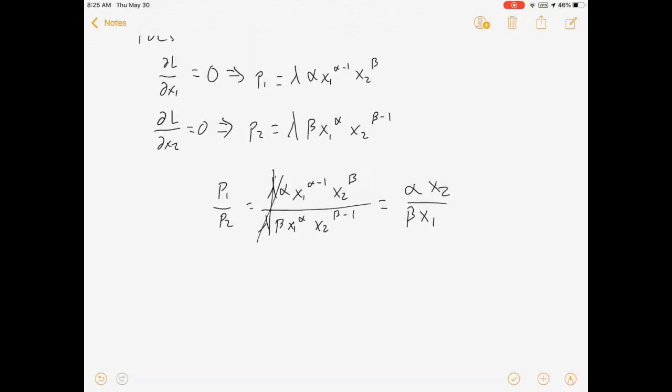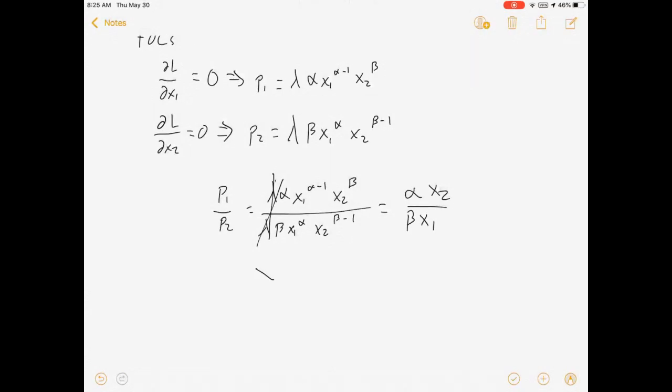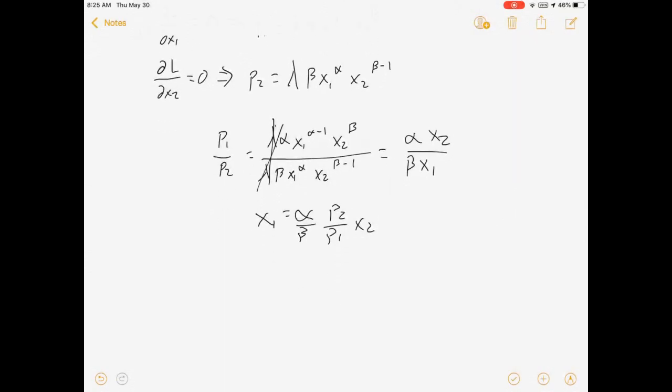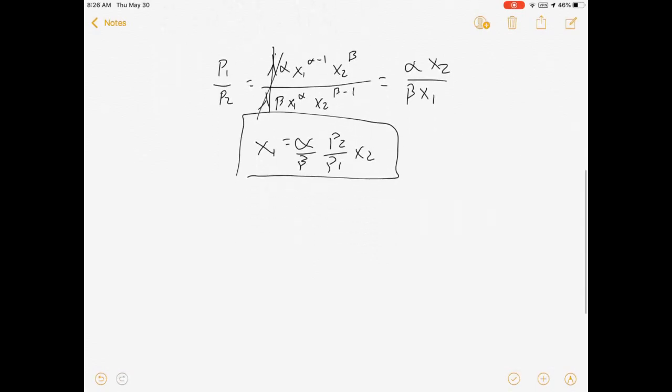Alright. So from that equation, I can solve for x1 just for fun. x1 is equal to alpha over beta times P2 over P1 times x2. Cool. Now once I have that, I've got this ratio. This ratio of x1 to x2 is what will allow us to minimize expenditures while still maintaining a fixed level of utility.